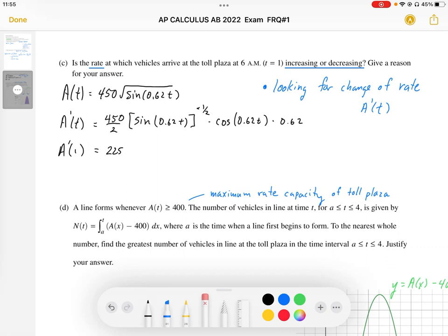In the numerator of my fraction, I'm going to end up with 0.62 cosine of t equals 1, which is 0.62. In the denominator, I'm going to end up with the square root of sine of 0.62.